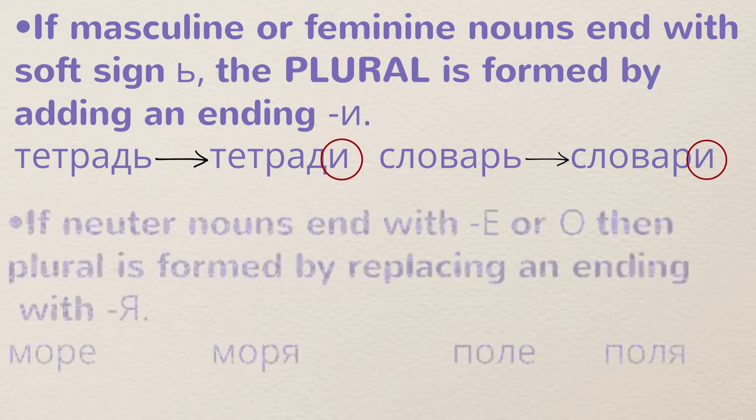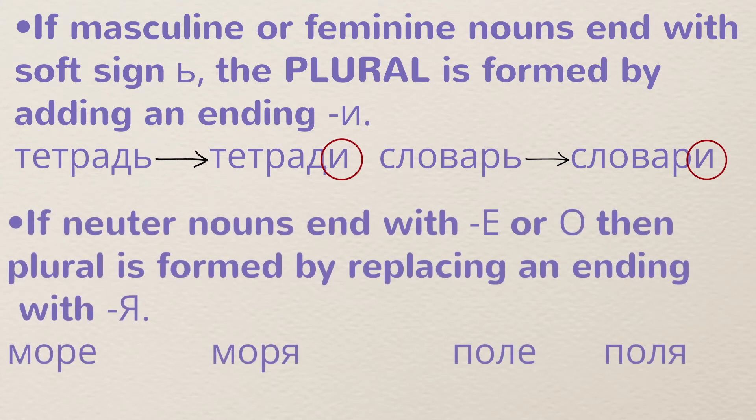What happens with neuter nouns? Neuter nouns have a slightly different ending. Instead of hard У or И, the plural ending for neuter nouns is Я: 'море' becomes 'моря', 'поле' becomes 'поля'. 'Дерево' is slightly irregular: 'деревья' — with a soft sign and Я. There are also irregular plurals like 'человек' → 'люди', 'ребёнок' → 'дети', and others, which I won't discuss in this video.